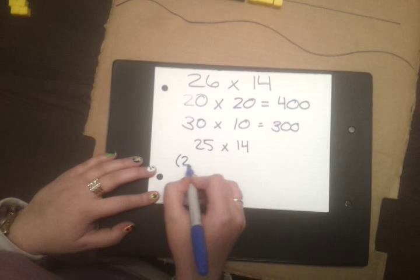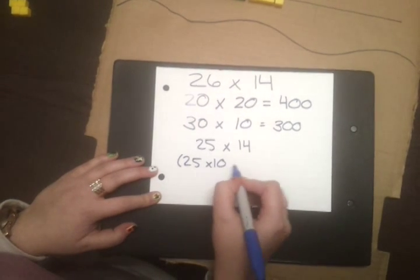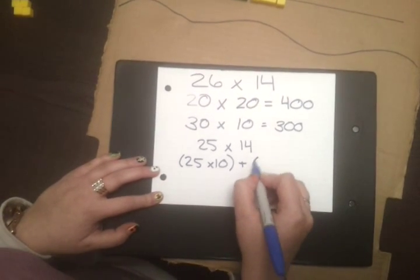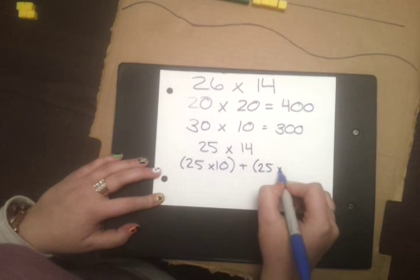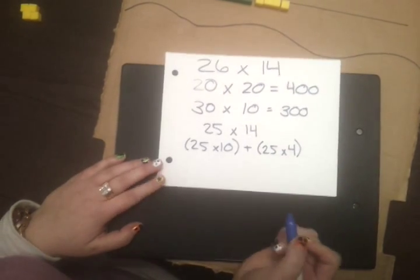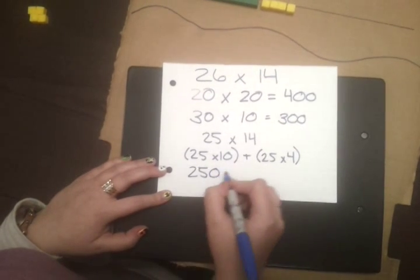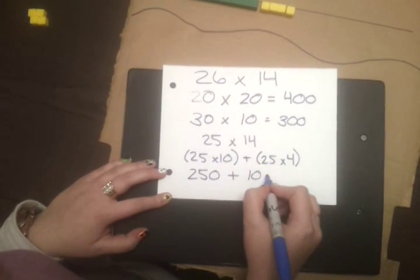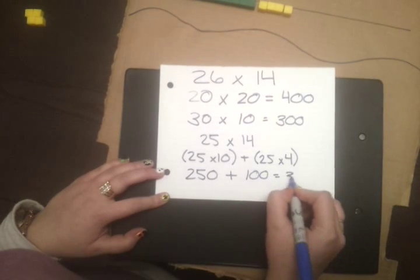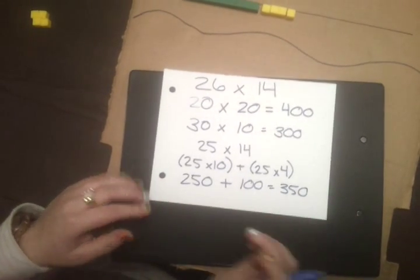From there, we can go 25 times 10 plus 25 times 4. These are fairly easy numbers, so we'll go 250 plus 100, which equals 350. So, that's a pretty good estimate.